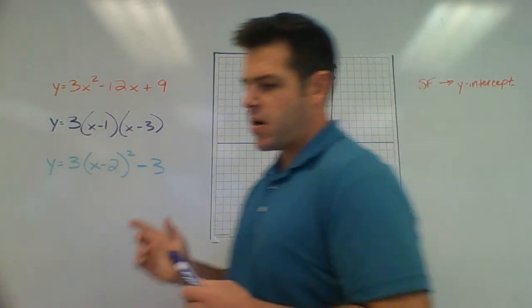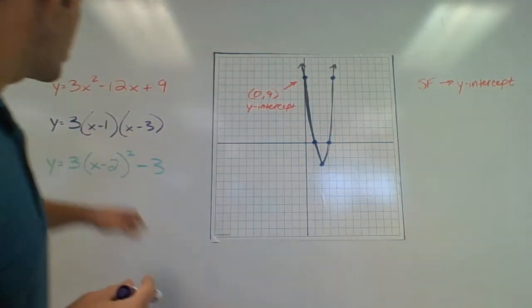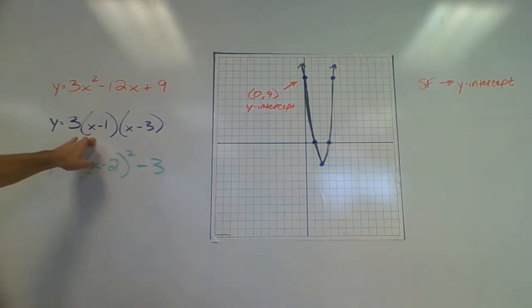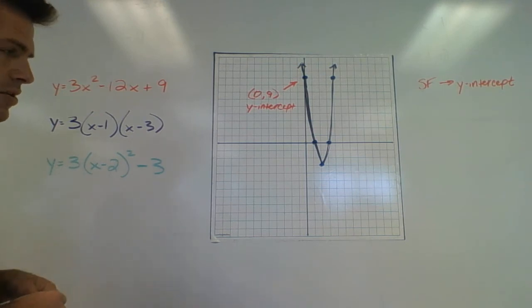Secondly, let me talk about what we have here in intercept form. y is equal to 3 times quantity x minus 1 times quantity x minus 3. And as it says within the name of the function, it is very easy for us to understand what the intercepts are. And we're talking about x-intercepts here.